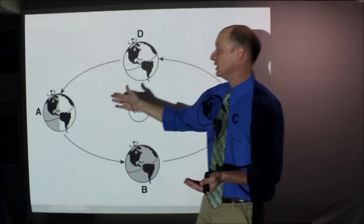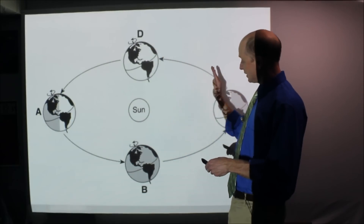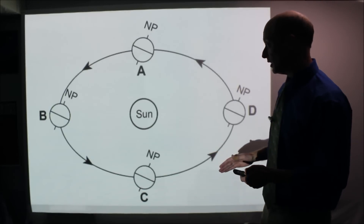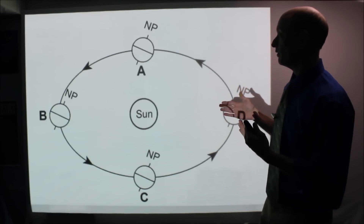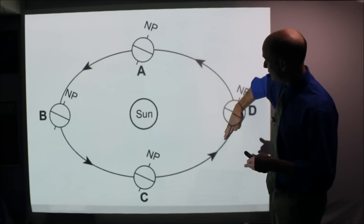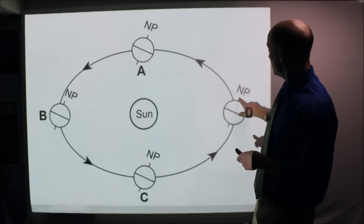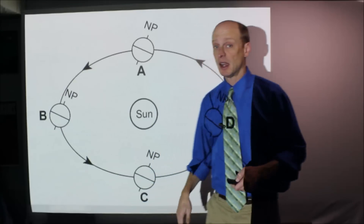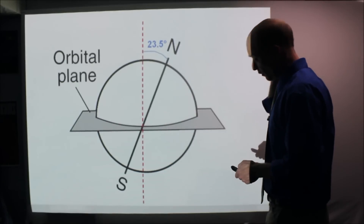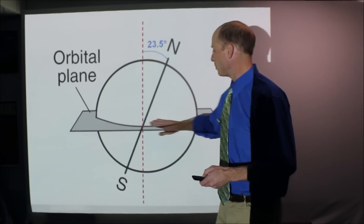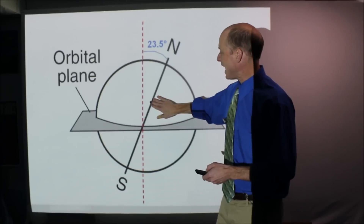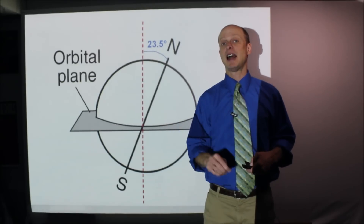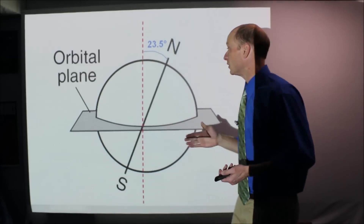Notice that Earth's axis is tilted — we'll call the north pole tilted to the left in this case, and it's always tilted the same direction, that tilt doesn't change. A different view shows the same thing, but don't always think left or right — think about whether the north pole is tilted towards the sun or away from the sun. That is going to be essential. If this is Earth's orbital plane, Earth's axis is tilted, not straight up and down.